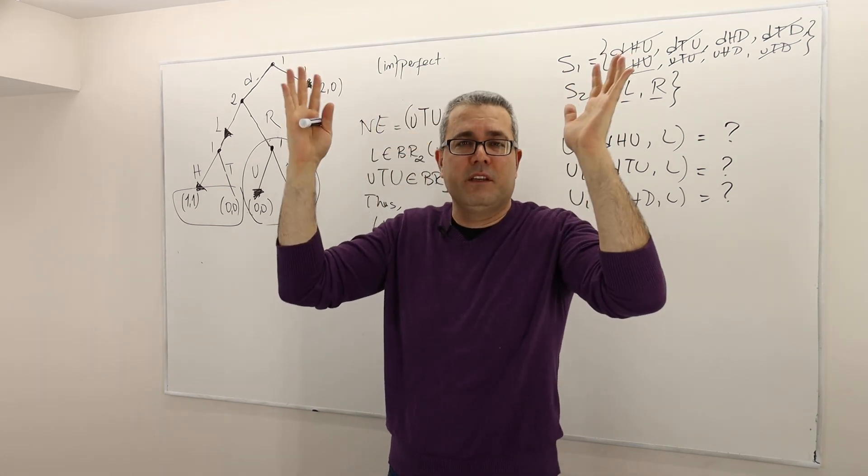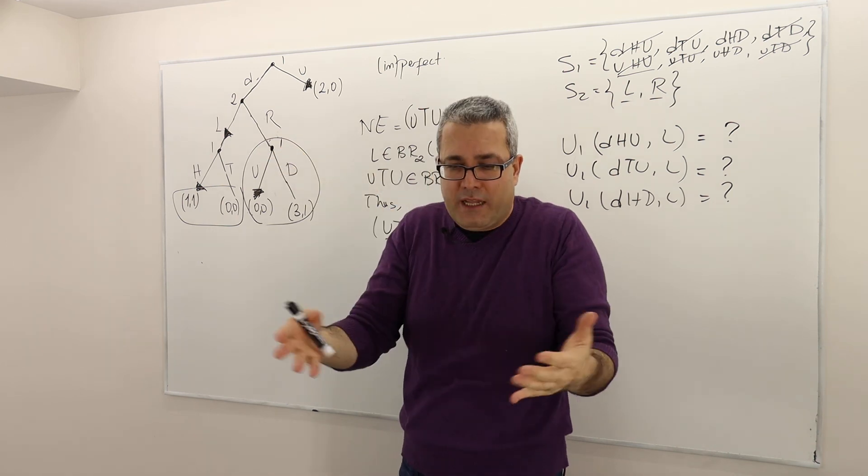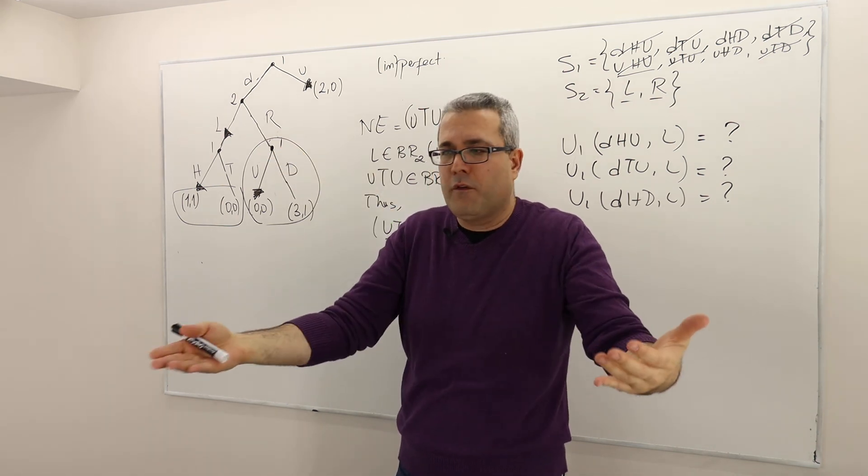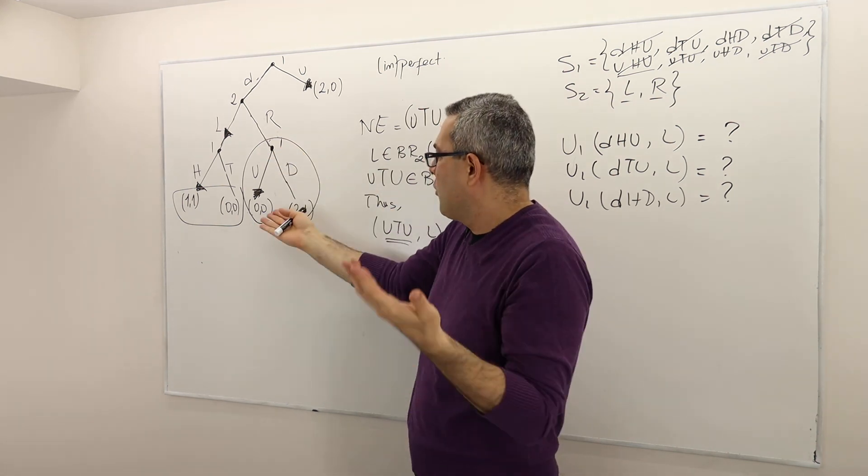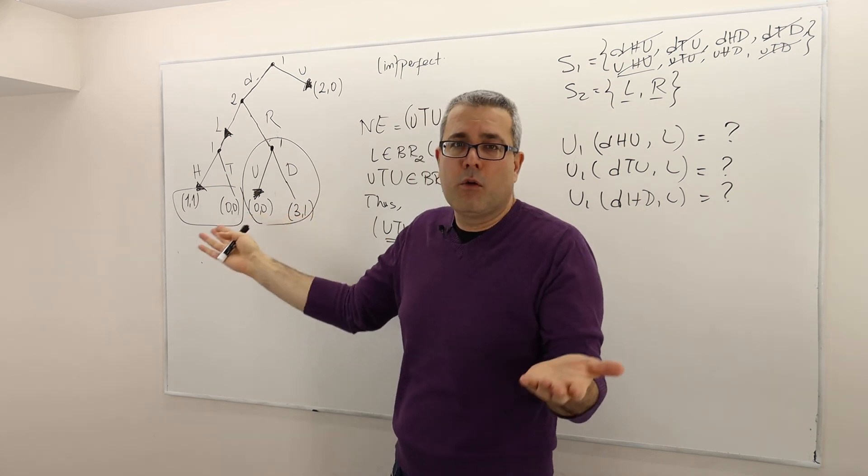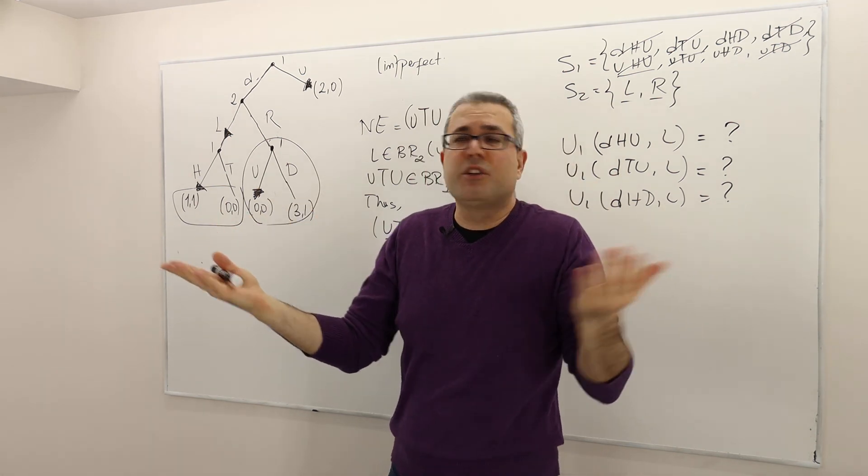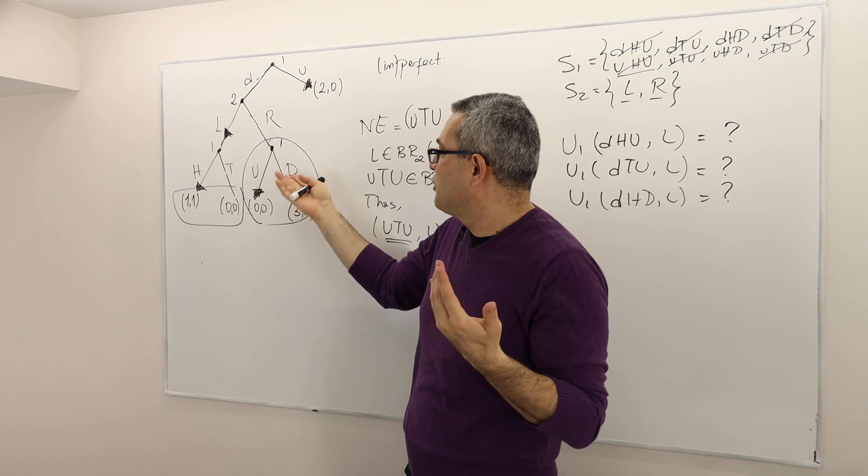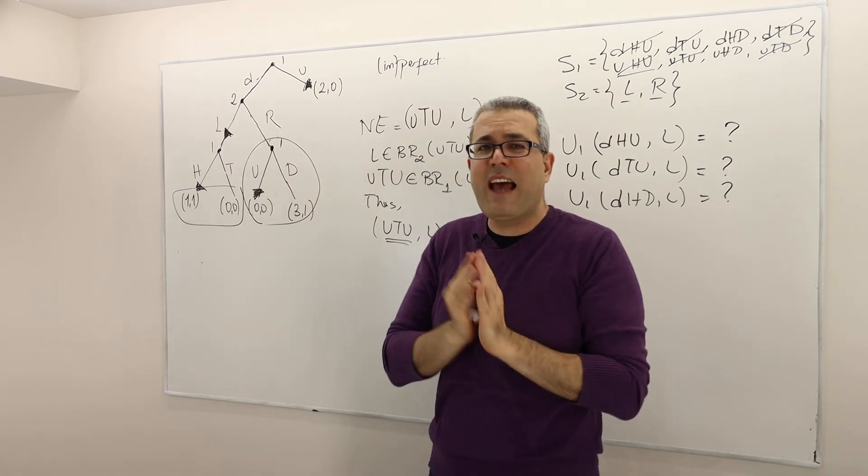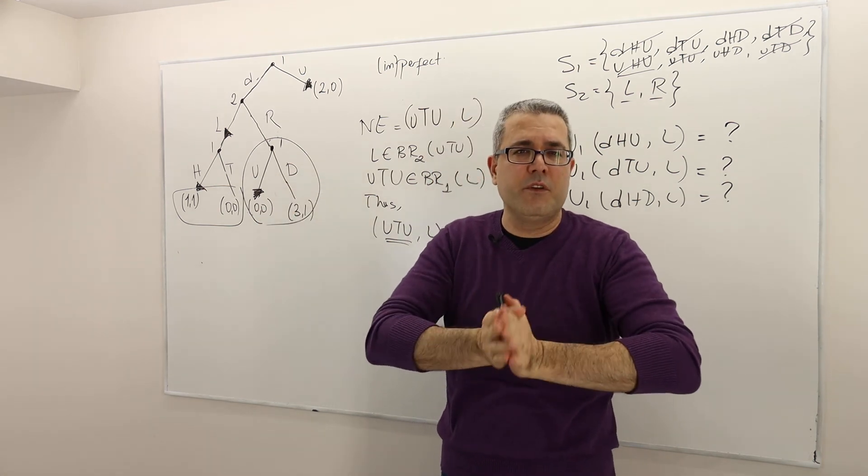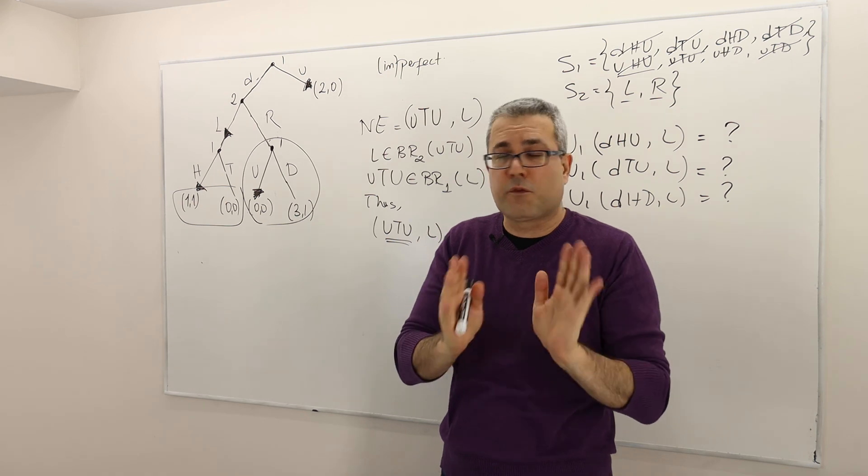They will just look at the future. It's like, what payoff do I really want? Do I want three or zero? Well, I'm a rational guy, so I want three. So that means I should be choosing D. That part, I believe, is kind of obvious and straightforward for everyone.